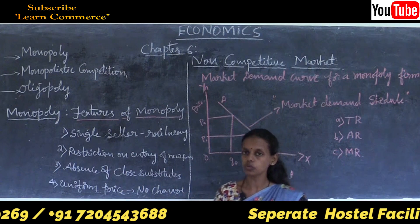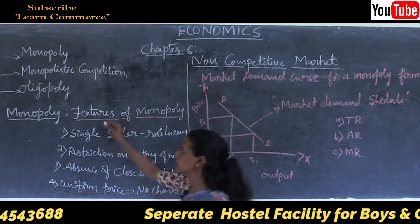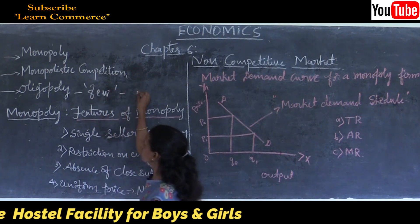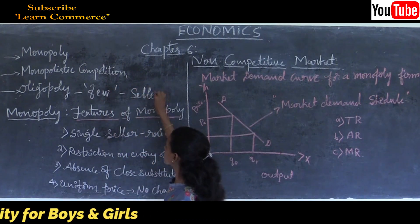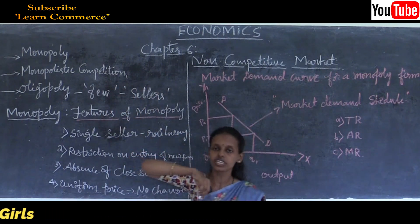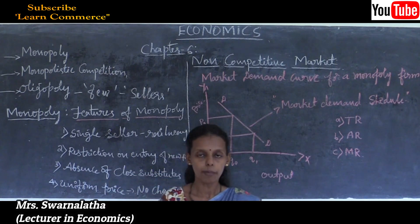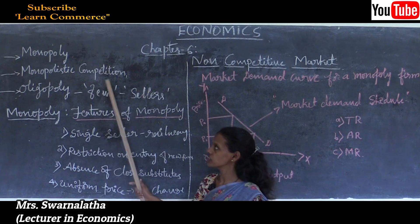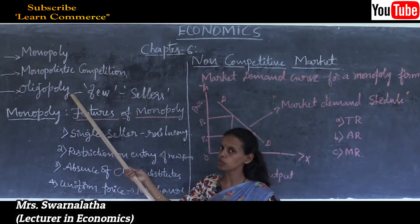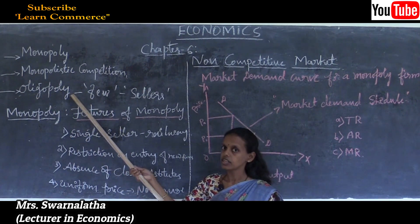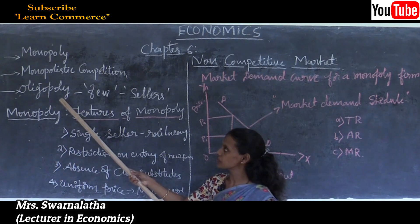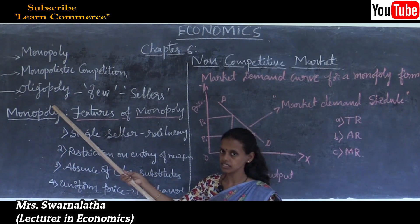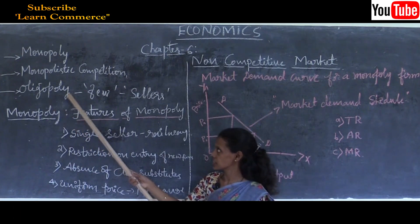The next concept to cover is oligopoly. Oligopoly - oligo means few, poly means seller. So few sellers deal with a large number of buyers - this is called the oligopoly market. How firms behave under oligopoly will be discussed in upcoming sessions.